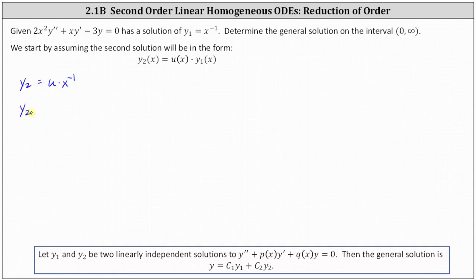y2 prime requires the product rule. y2 prime is equal to u times the derivative of x to the power of negative one with respect to x, which is negative x to the power of negative two — let's put the negative in the front — and then plus x to the power of negative one times the derivative of u with respect to x, which is u prime.